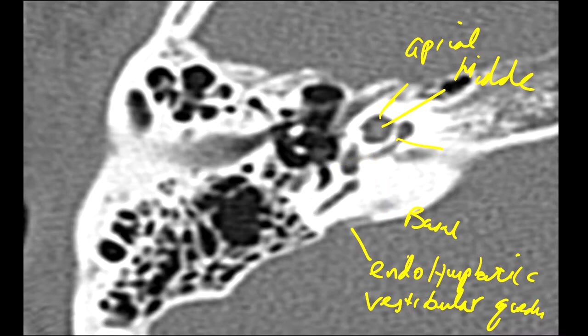You're also starting to see some of the semicircular canals, including the posterior semicircular canal, and we're just getting a piece of the vestibule as well.